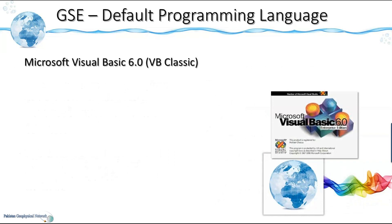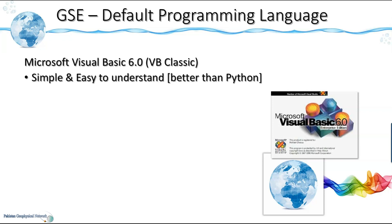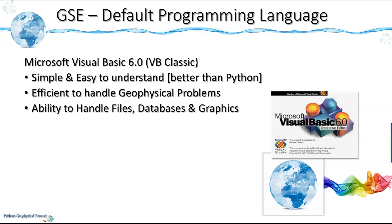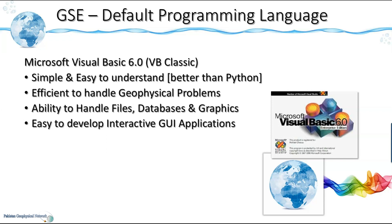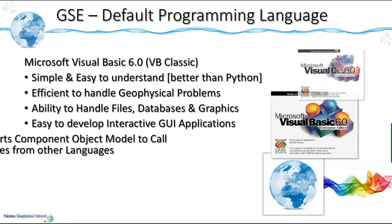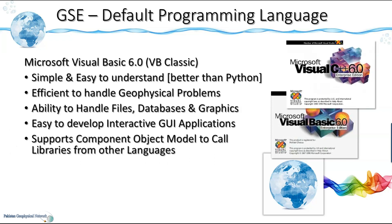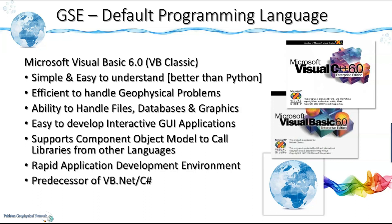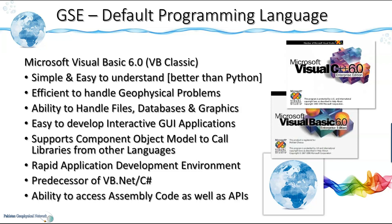The default programming language for this program is Microsoft Visual Basic 6, or VB Classic. It is a simple and easy-to-understand language, much simpler than Python. It can efficiently handle geophysical problems. It has the ability to handle files, databases and graphics, and is easy to develop interactive GUI applications. It supports component object models to call libraries from other languages, is a rapid application development environment, and is a predecessor of VB.NET and C#. Thus you can easily migrate to these newer development platforms. It also has the ability to access assembly code as well as Windows APIs.